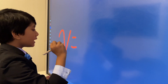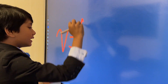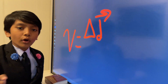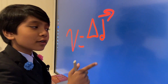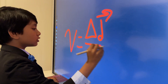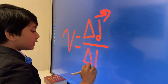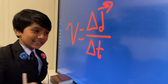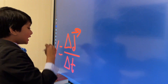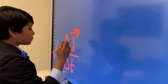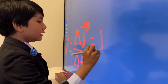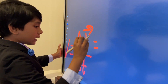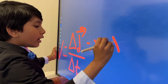Velocity is the change in displacement — not distance, remember, vectors not scalars — over the change in time. So the change in displacement would obviously be just x2 minus x1.